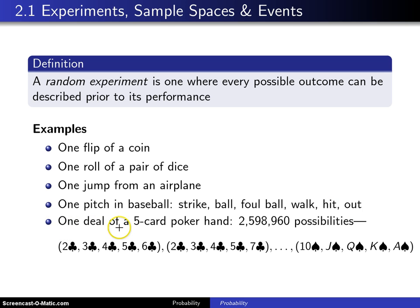And finally, the fifth example: one deal of a five-card poker hand. In this case, there are 52 choose 5, which is about 2.5 million possibilities. And if you listed them all out, they would look something like that.